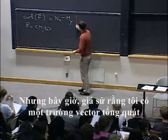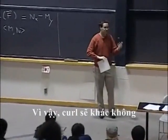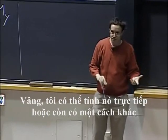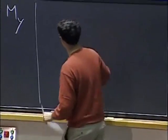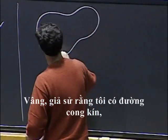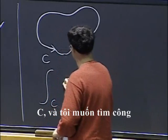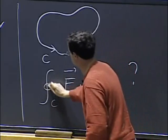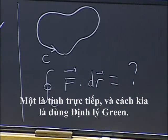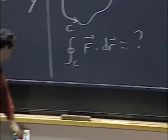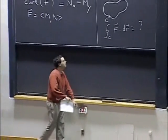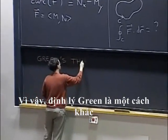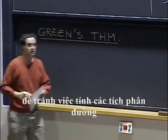But now let's say that I have a general vector field where the curl will not be zero, and I still want to compute a line integral along a closed curve. I could compute it directly, or there's another way — and that's what we are going to see today. So if I have a closed curve C and I want to find the work, there are two options: one is direct calculation, and the other one is Green's theorem.